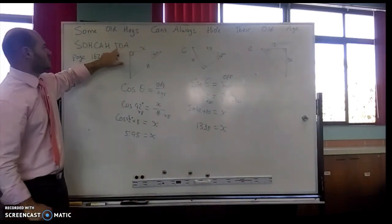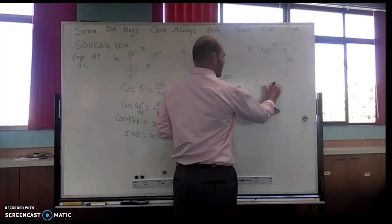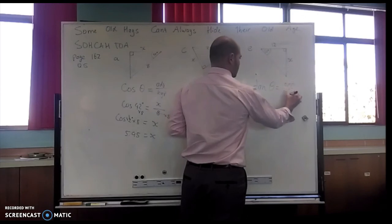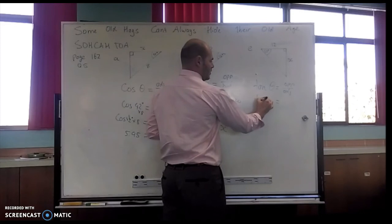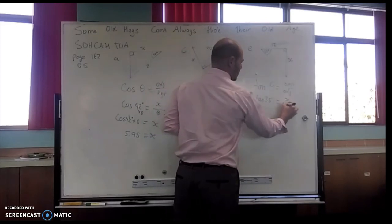So I'm going to be using my tangent. Tan of my angle equals opposite over adjacent. I've substituted my values. Tan of 35 equals x over 12.